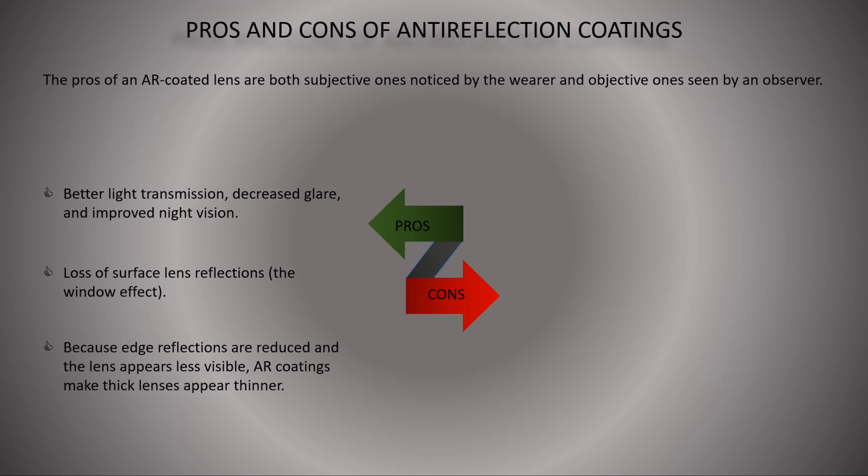Cons of AR coatings: smudges are more visible than with uncoated lenses. AR coatings exaggerate the contrast between clean and dirty areas.